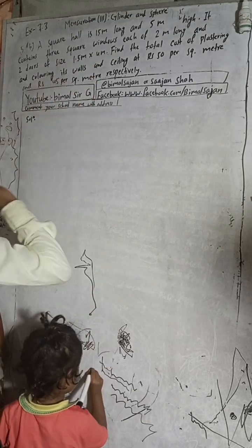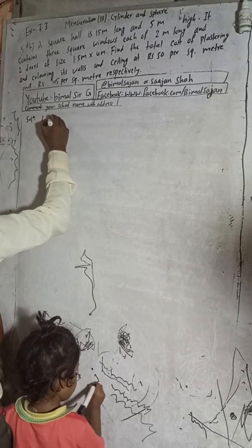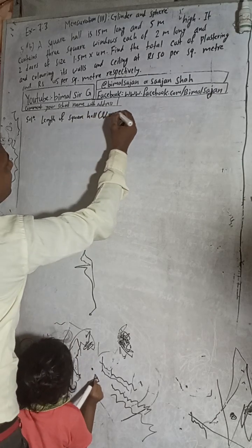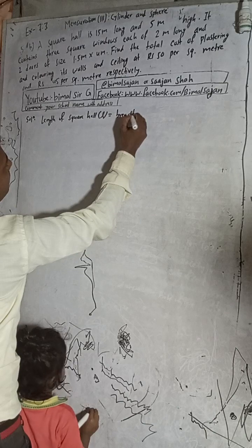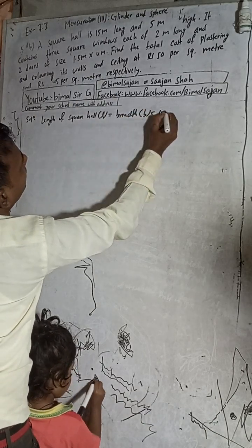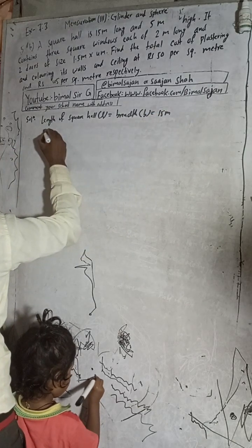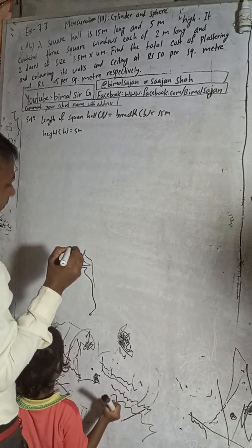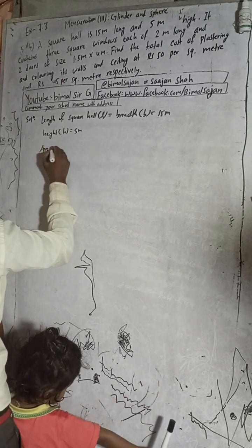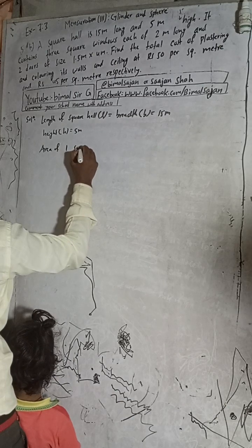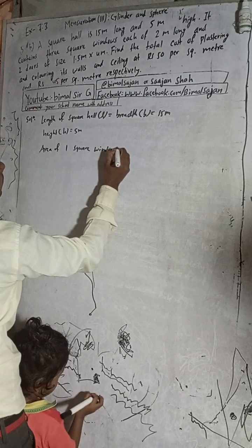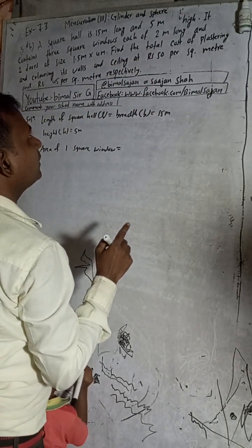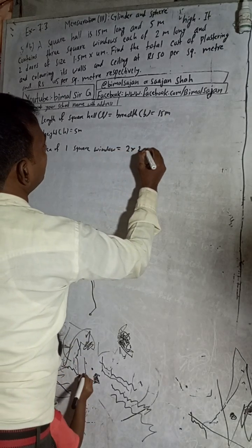So the square hall: length equals width — it's a square room — so length is equal to width, which is 15 meters. Height is 5 meters. It contains three square windows, so area of one square window: the window is 2 meters long, so being square it is 2 meters by 2 meters, which equals 4 square meters for one square window.